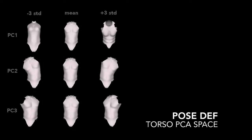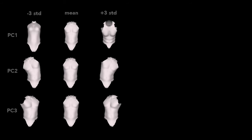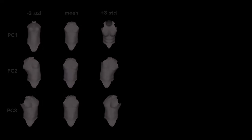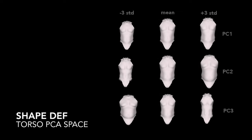Pose-dependent deformations are represented with a linear model, learned with principal component analysis. As an example, here is the PCA space of the torso. In a similar way, we represent intrinsic shape that captures how shape varies between people.